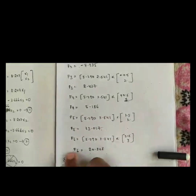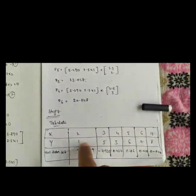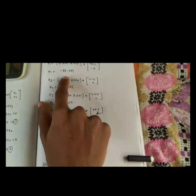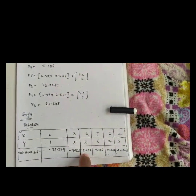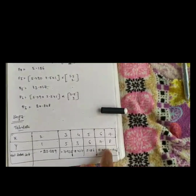Following the same procedure for F2 through F6, we get: F2 equals −7.935, F3 equals 2.437, F4 equals 5.186, F5 equals 13.017, F6 equals 20.848. Step seven: using the obtained feature vector values and the original dataset (x: 2,3,4,5,6,7 and y: 1,5,3,6,7,8), we construct the new reduced dataset: −23.389, −7.935, 2.437, 3.186, 13.017, 20.848.